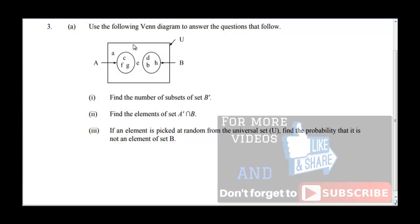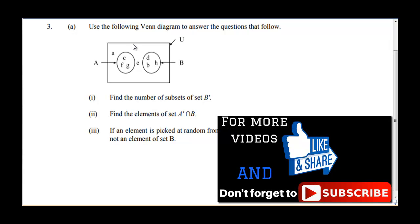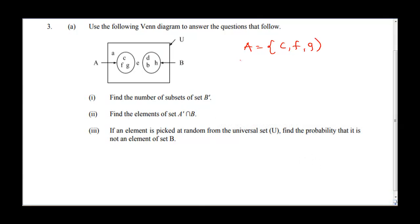In this question we are asked to use the following Venn diagram to answer the questions that follow. Studying this Venn diagram, we notice that we have two sets: set A and set B. From the Venn diagram, set A contains elements C, F, and G. Set B contains elements B, D, and H, while the universal set contains everything, which includes A, B, C, D.